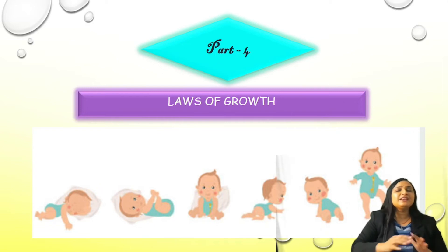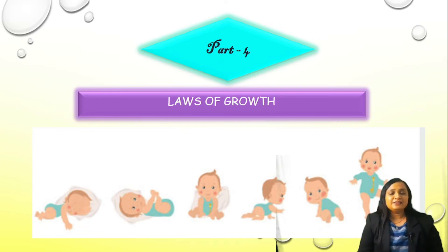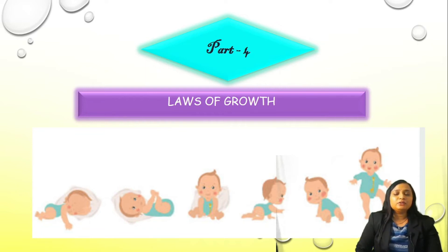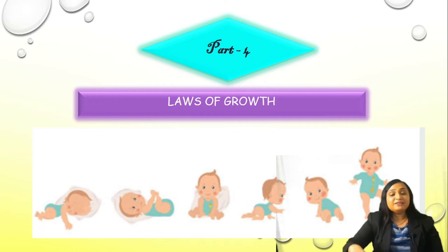Before moving to Part 4, let us have some relaxation — stretch your hands, stretch your legs, get relaxed, and have a breathing exercise for 5 times. Put your cupped hand on your tummy and when you breathe in it should come out. Now let's start quickly Part 4, that is, laws of growth.